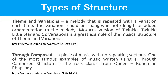Theme and variations is a melody that is repeated with a variation each time. The variations could be changes in note length or added ornamentation to the melody. Mozart's version of Twinkle Twinkle Little Star — Twelve Variations — is a great example of theme and variations. Use the link to have a listen; it is a fantastic example.